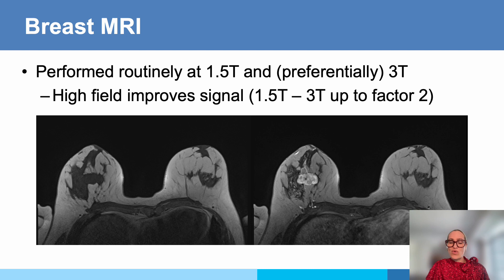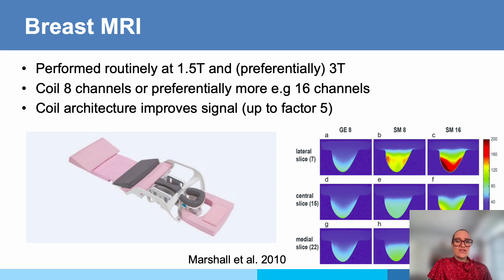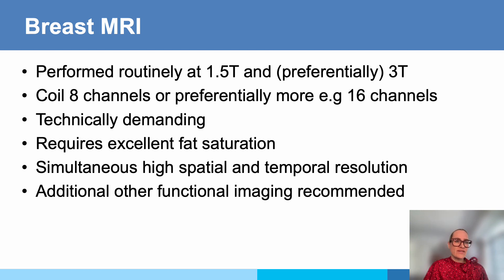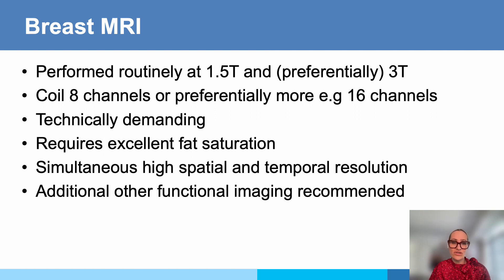We routinely perform breast imaging at 1.5 and 3 Tesla, preferentially 3 Tesla because it improves the signal up to a factor of 2. A very important part of breast imaging is the coil — we showed a 16-channel coil in our first video. We preferentially use 16 channels because it must be a dedicated breast coil, and the coil architecture can improve the signal up to a factor of 5. The minimum coil requirement is 8 channels, preferentially up to 16. It's technically demanding, requires excellent fat saturation, and we use high spatial and temporal resolution protocols and functional imaging.